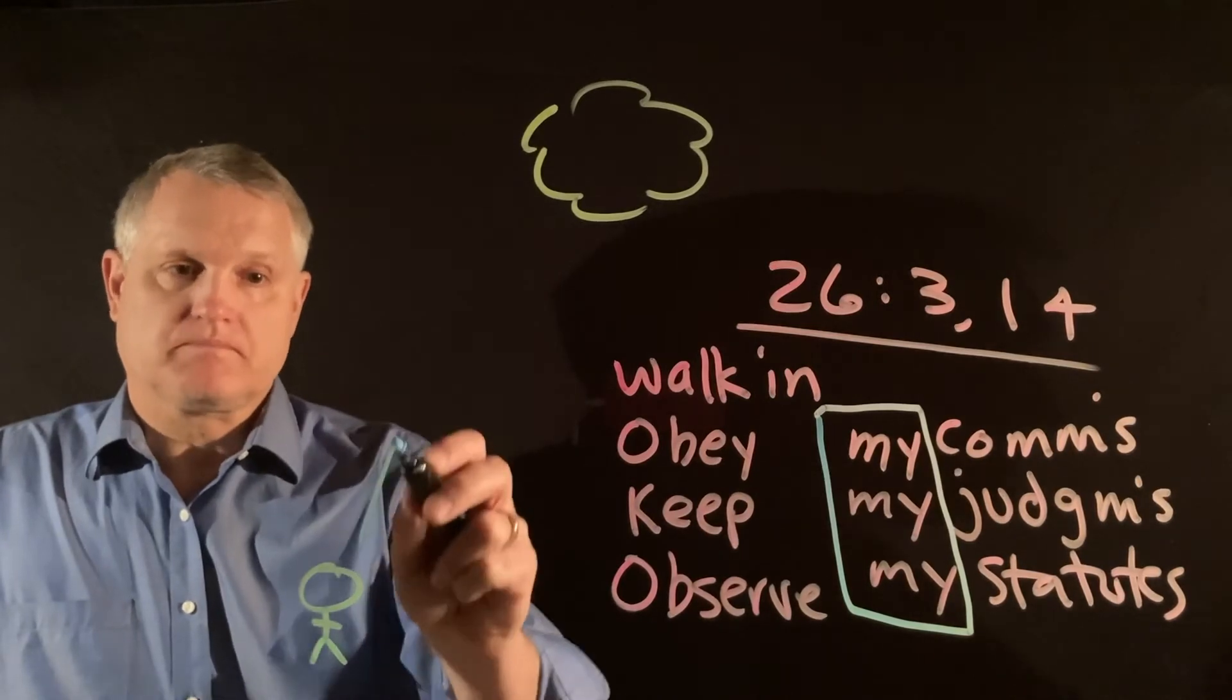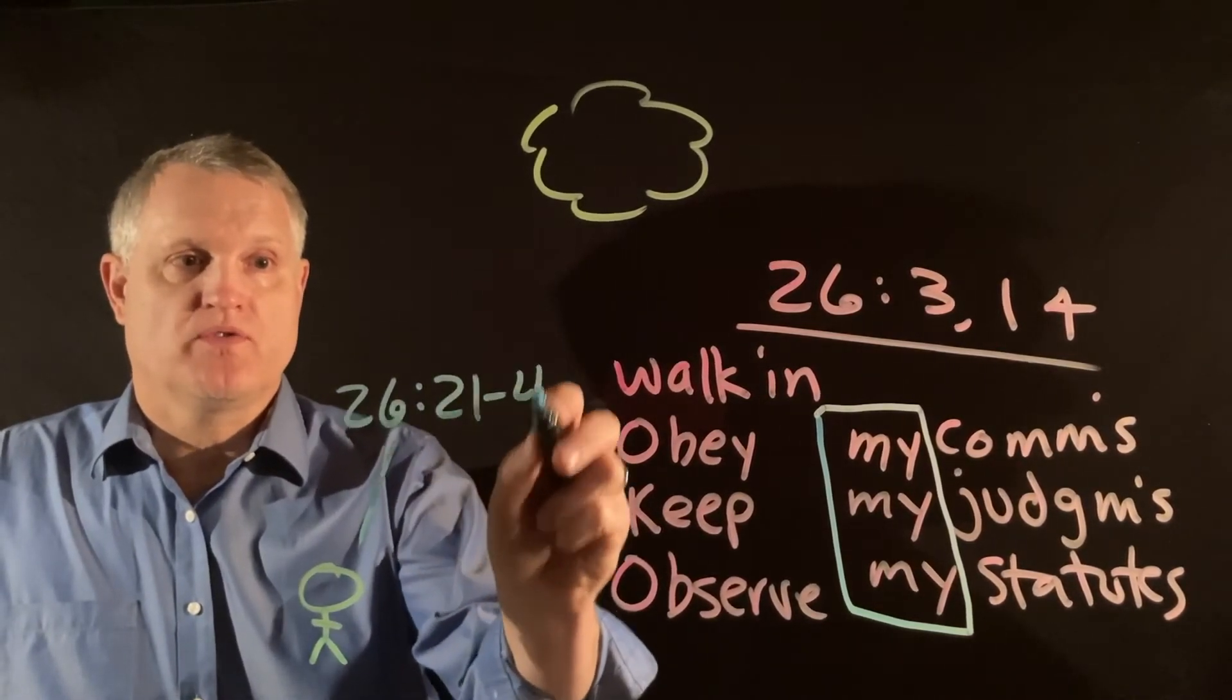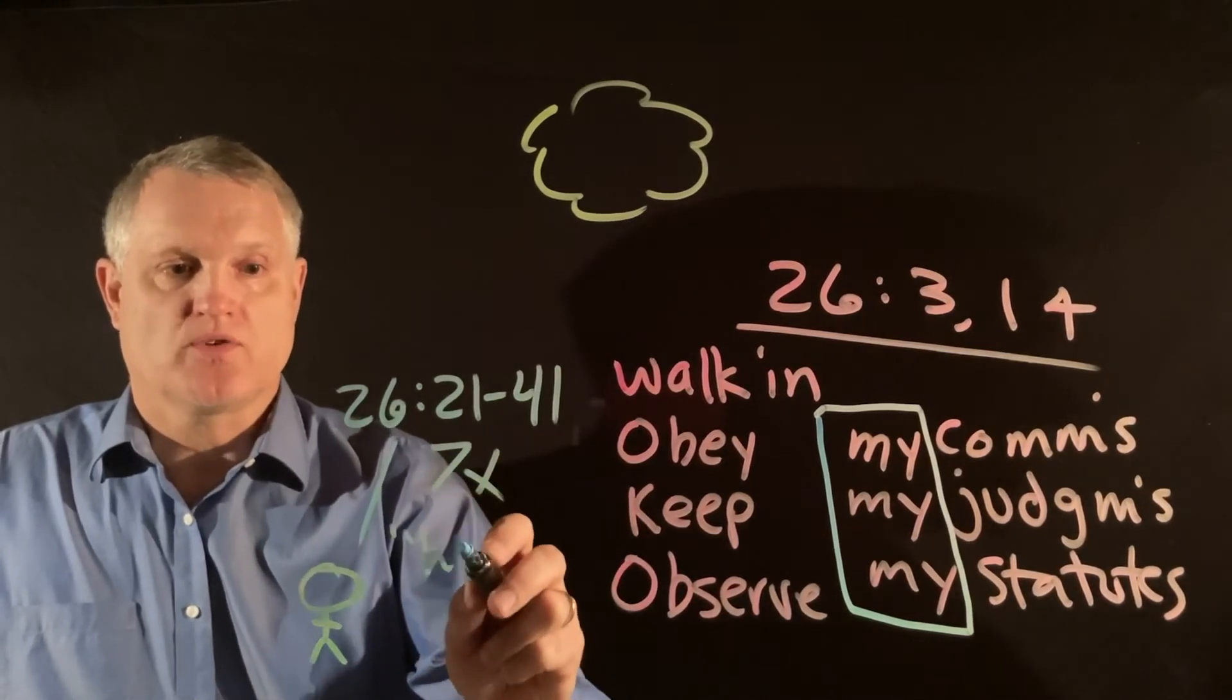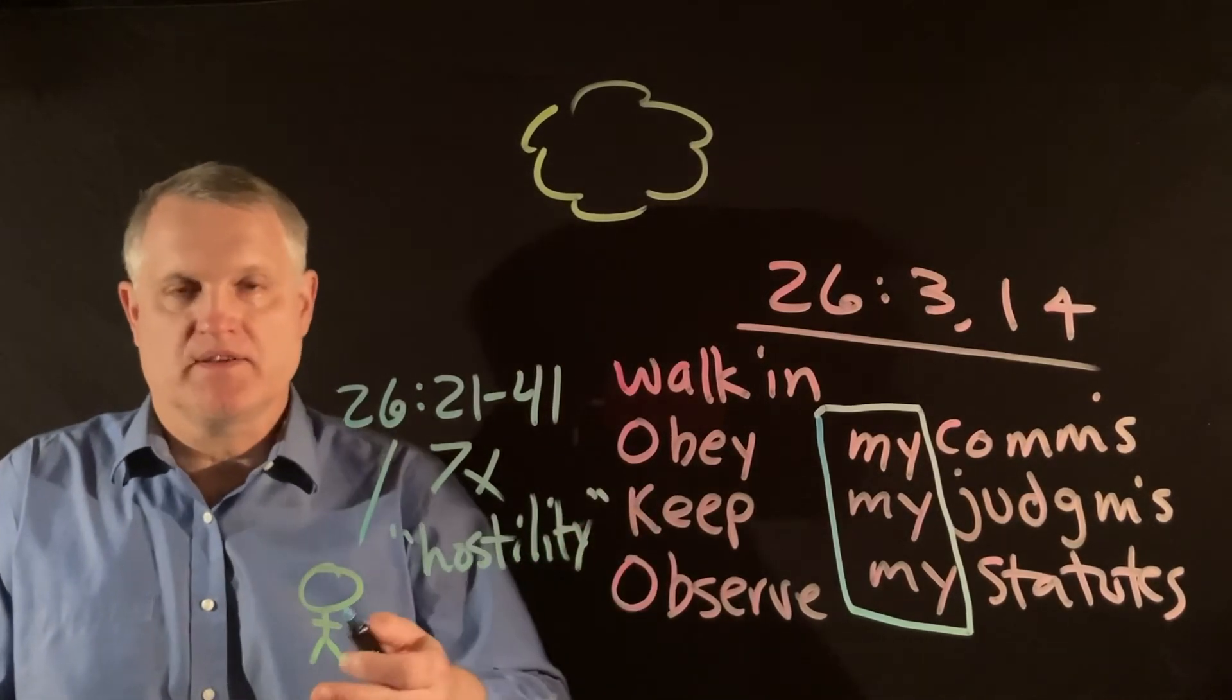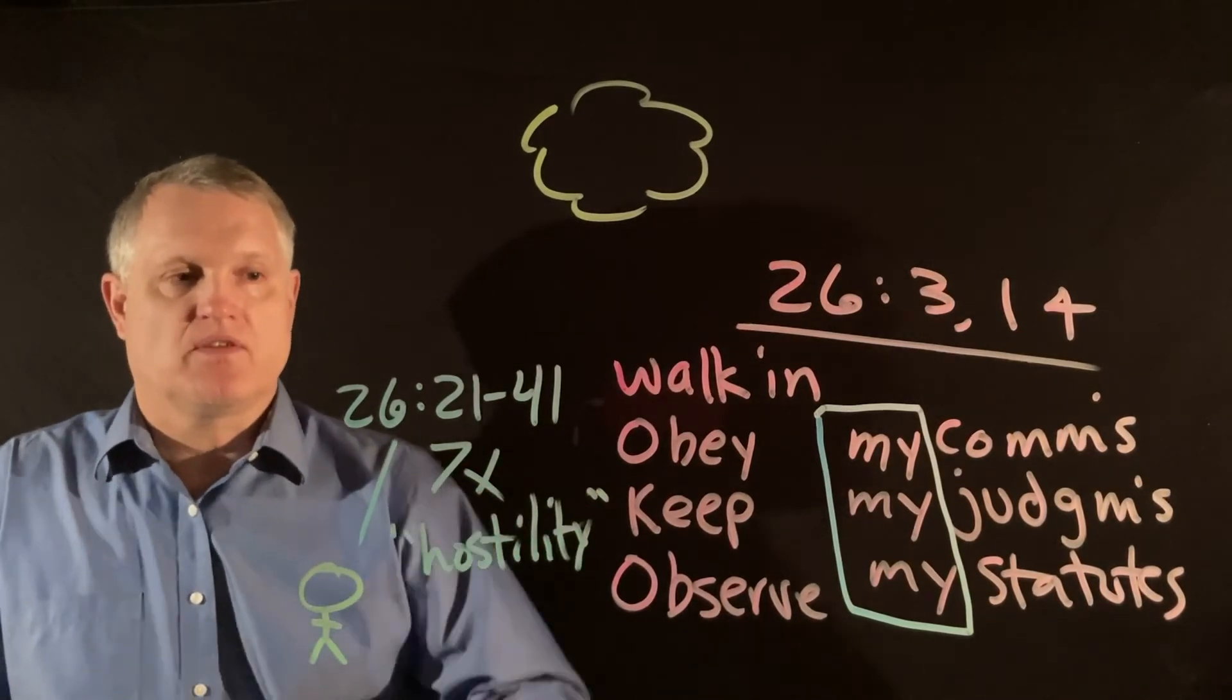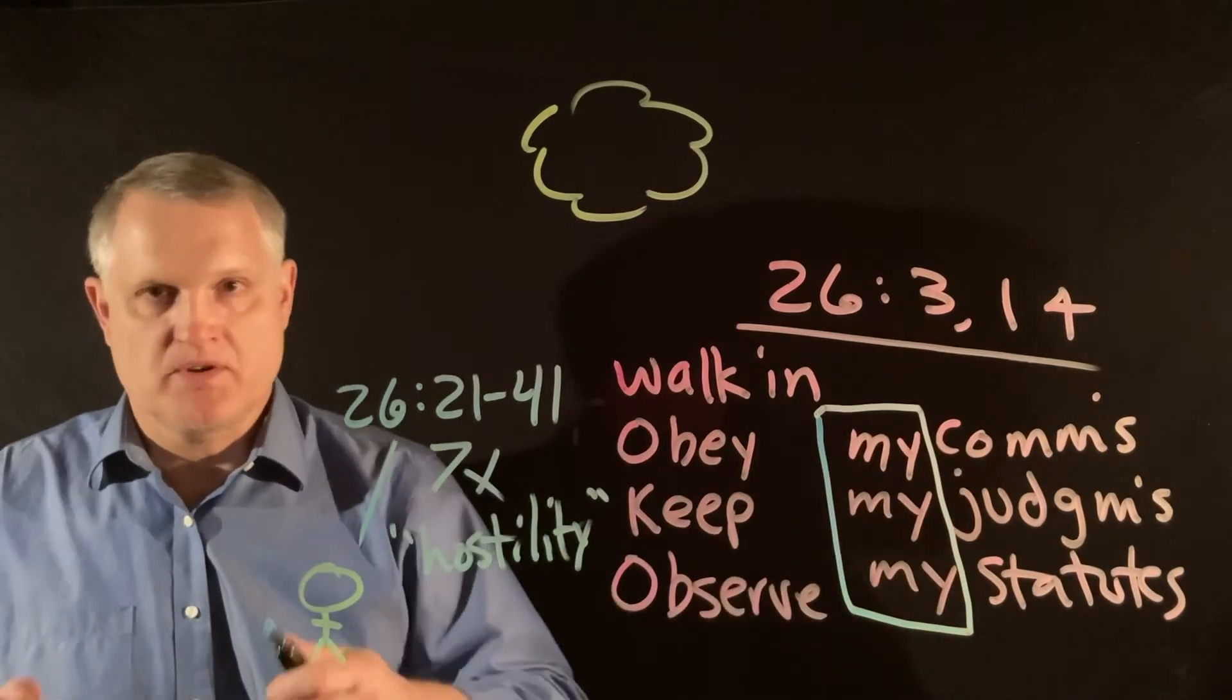And fourth, one more thing—and we can see this in 26 verses 21 through 41—seven times the word, and it's only used in Leviticus, 'hostility.' It comes across sometimes as 'contrary'—you might see the word contrary in your verses here—but the idea that the opposite of this is not imperfection.